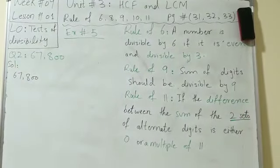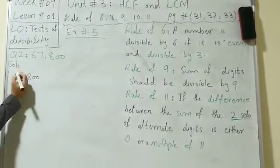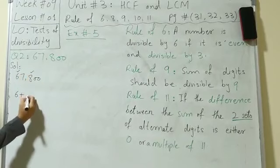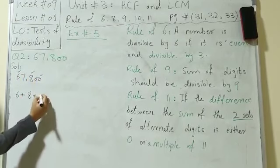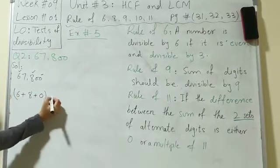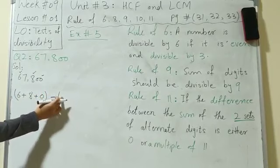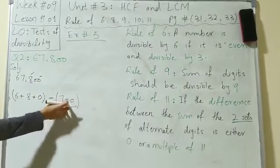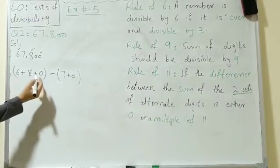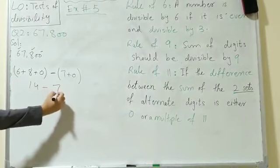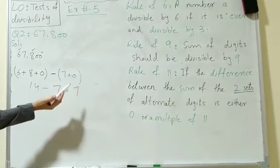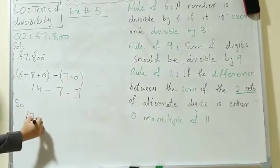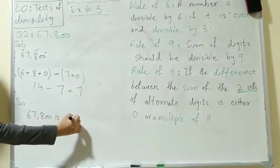For the rule of 11, we find two sets of alternate digits for 67,800. First set: 6, 8, and 0; second set: 7 and 0. Solving: 6 plus 8 plus 0 equals 14, minus 7 plus 0 equals 7. So 14 minus 7 equals 7. Since 7 is neither 0 nor a multiple of 11, 67,800 is not divisible by 11.